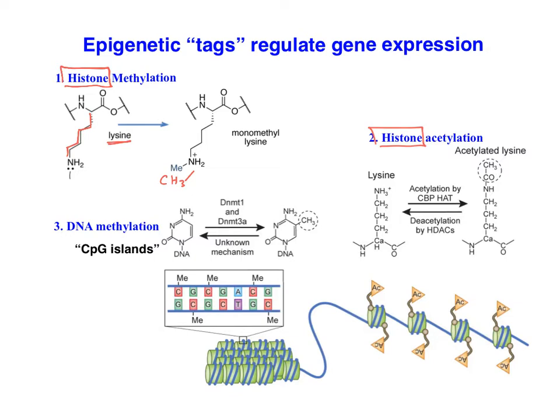Another option would be to acetylate the histone. Again, I'm showing you lysine that ends with a nitrogen group, and acetylated lysine has an acetyl group stuck onto the end of the lysine molecule. There are a couple of different proteins that can be involved here — these are reversible processes. We can have methyltransferases or demethylase enzymes, and here we can have acetyltransferases or deacetylase enzymes.